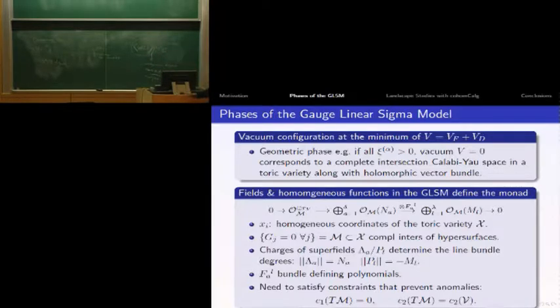The charges of our superfields lambda and p determine the line bundle degrees in our monad, so they determine how our bundle looks like. The functions F_alpha which appear in the monad are given by those in the superpotential of the gauge linear sigma model.